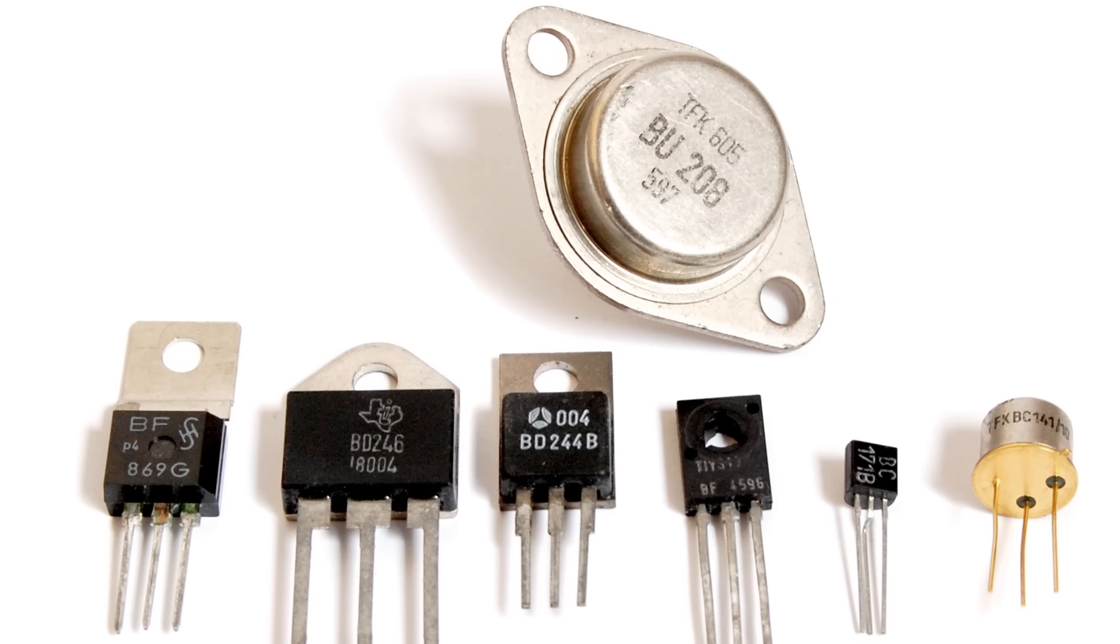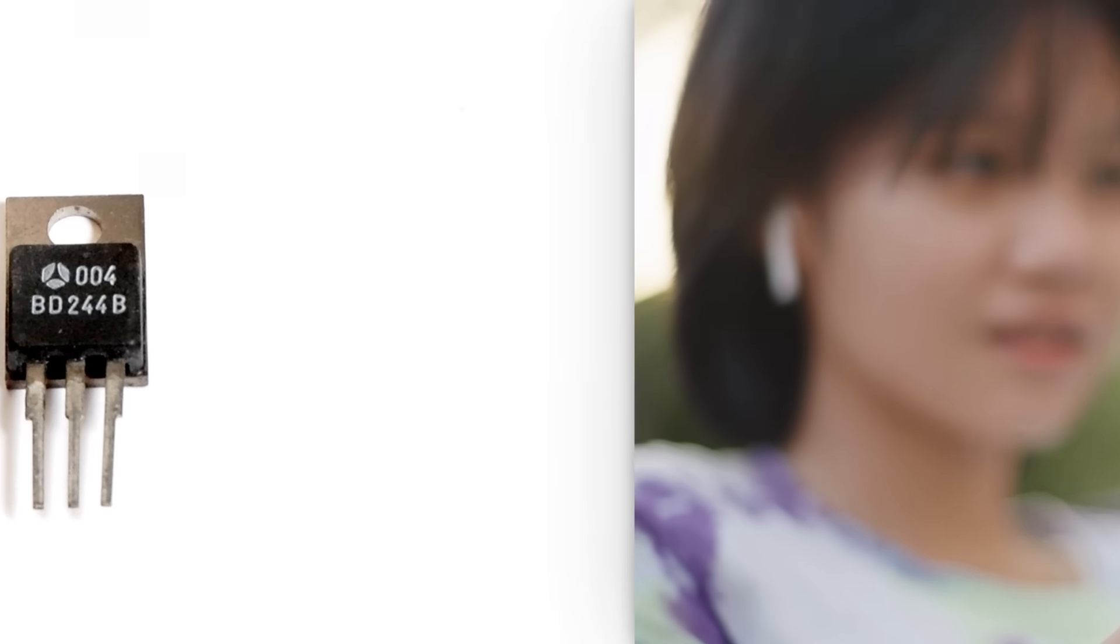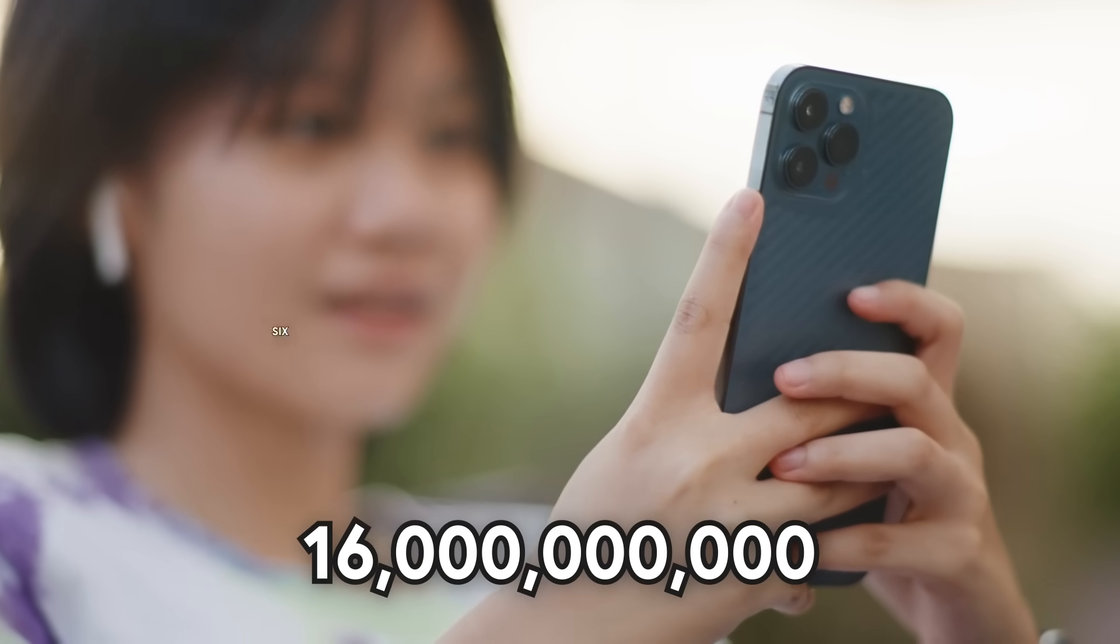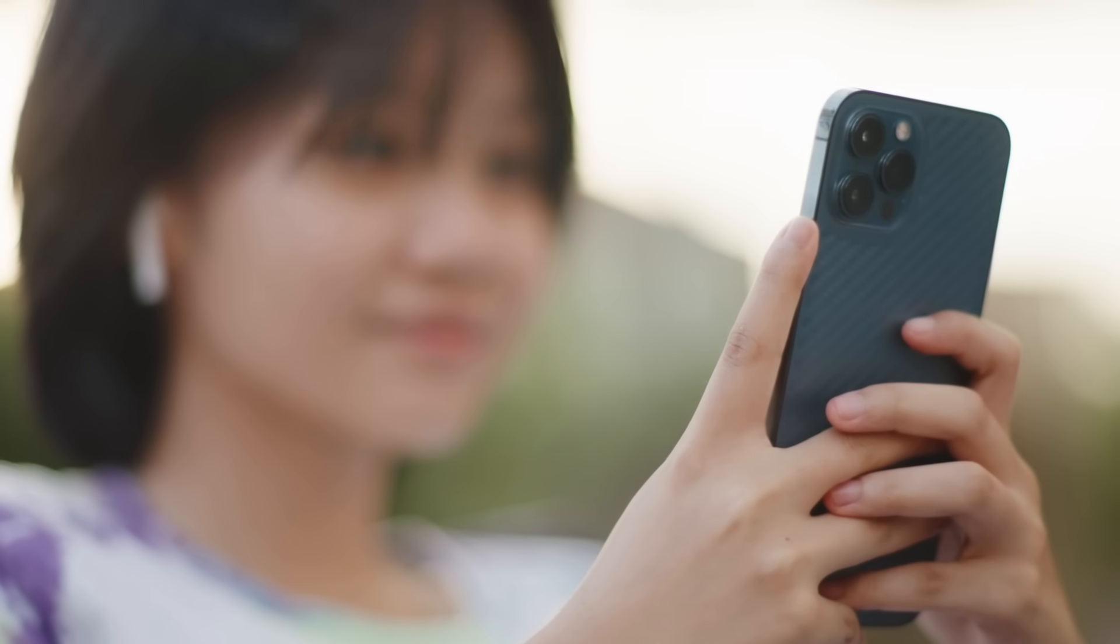The first planar transistor, from 1959, had a transistor count of 1. The chip in the iPhone 14 Pro has a transistor count of 16 billion. 16 billion. That's a lot to fit on one chip.